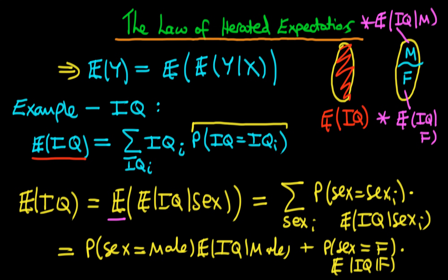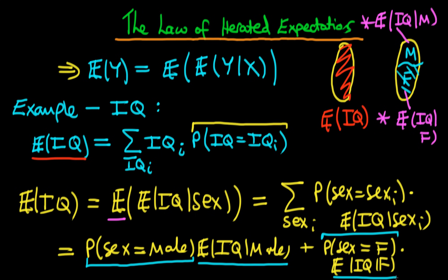And that is exactly what we would expect intuitively. Each of these probabilities — the probability that sex equals male — represents the proportion of the population which is male, and similarly for female. All that the law of iterated expectations tells us is that to arrive at an overall average level of IQ, we take the subpopulation levels of IQ — the expected value of IQ for males and for females — and combine them together with their relative proportions and add them. And that makes intuitive sense.